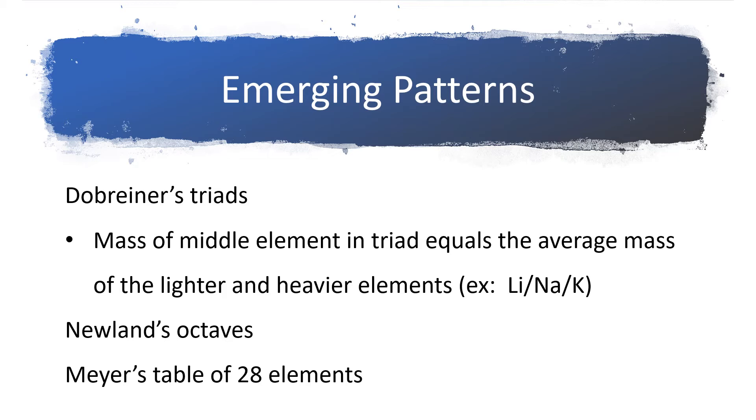Newland figured out some arrangements and groupings of eight elements that were referred to as octaves. Meyer had proposed a table of 28 elements. So by the mid-1800s there was a lot of effort being placed into trying to recognize these patterns and come up with some sort of standard arrangement of the elements.